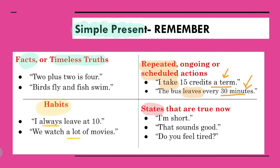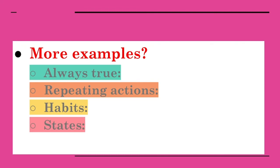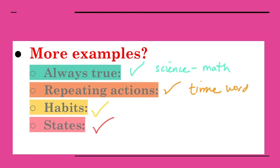Finally, states — states that are true now. 'I am short.' 'Do you feel tired?' Try it yourself; try to think of some examples: things that are always true, things that are repeated or scheduled, habits, states. Remember your clue words. For repeated actions, there's probably going to be some kind of time word. For habits, there's probably going to be a word like 'usually' or 'always.' For states, they are almost always used to describe a person or situation.